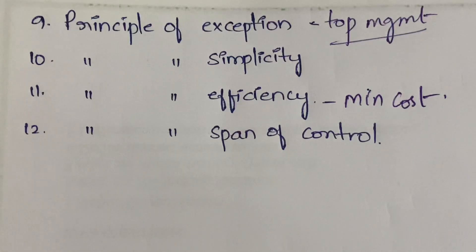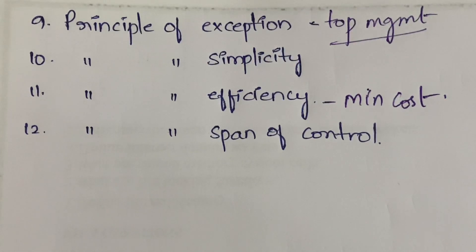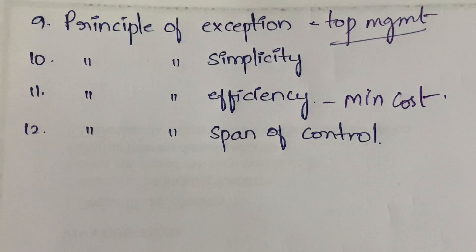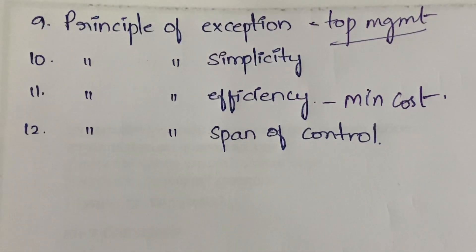The last principle is the principle of span of control — how many subordinates can be supervised by a single supervisor. Giving one supervisor 10,000 employees is foolishness; that person cannot handle them all. You should divide subordinates appropriately, because if you allot too many people, the supervisor cannot look after them and employees will miss guidance. You should set a policy and limit for how many subordinates are assigned to each supervisor.